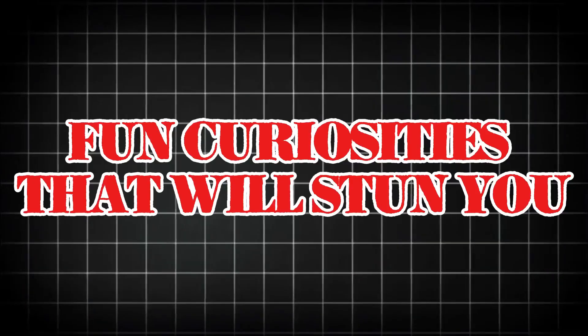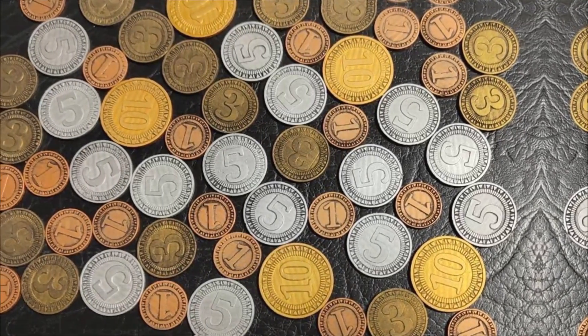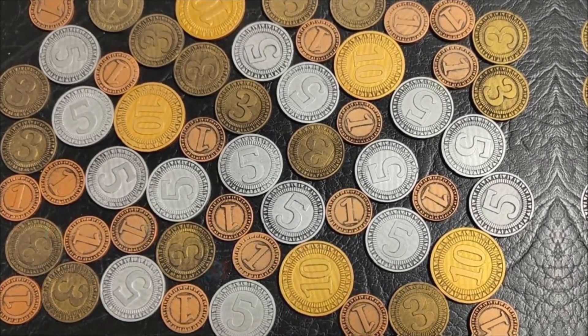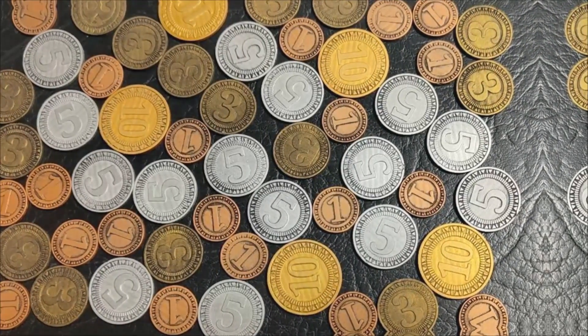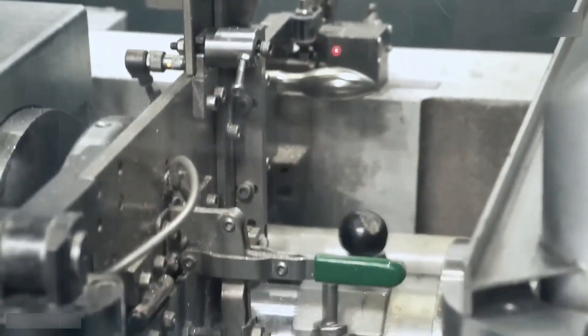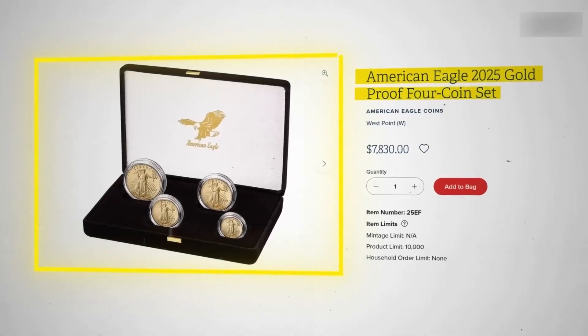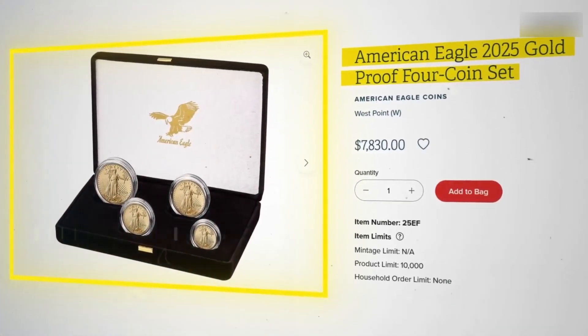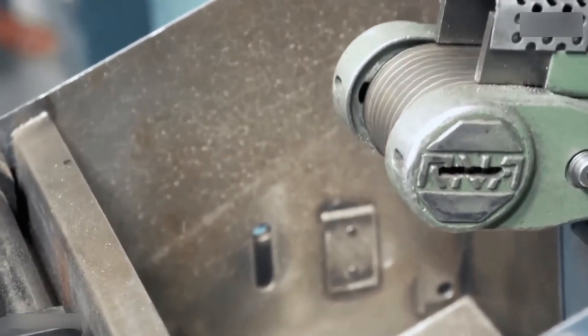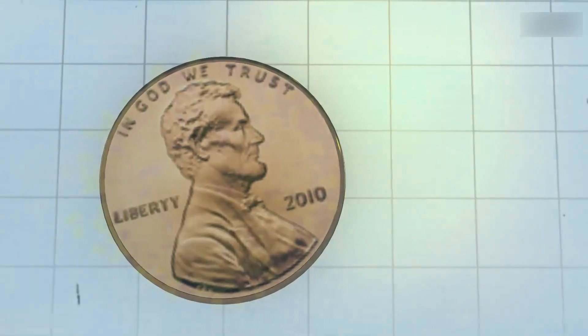Fun curiosities that will stun you. Some machines strike hundreds of millions of coins a year—that's like your house filled to the ceiling with dimes every single year. There are secret error coins: imagine a dime with Lincoln's date upside down. Those are super rare and extremely coveted by collectors. The mint sometimes runs coin hunts, limited runs, new special designs, or mystery rolls where you might stumble on an unexpected gem. It's like a legal treasure hunt. The metal composition changes occasionally—as metal prices shift, the mint adapts their alloy recipes.